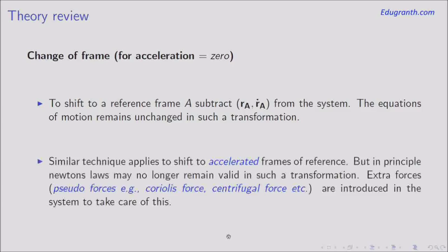It is important to keep in mind that frame A should have zero acceleration. If frame A has some acceleration, we can still shift to it by also subtracting the acceleration vector R̈_A. However, one must be careful because Newton's laws might not remain valid in such accelerated frames. In principle, we need to add extra forces — called pseudo forces — in order to use Newton's law again. Examples include the Coriolis force and centrifugal force, which do not have a physical origin but compensate for the shift into accelerated frames.